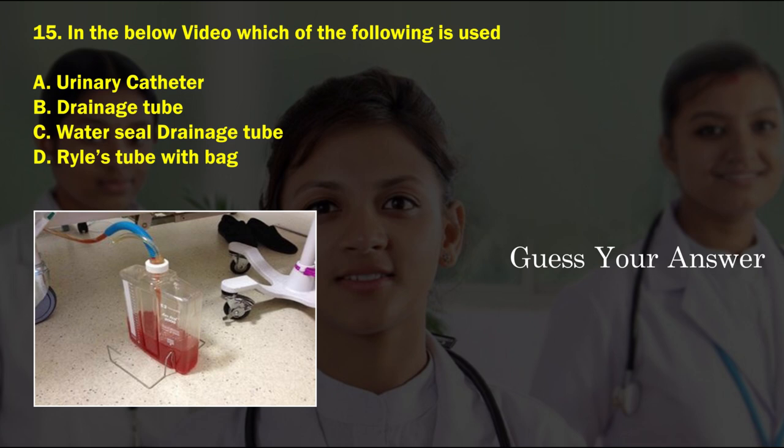In the below image, which of the following is used? Option A: urinary catheter, option B: drainage tube, option C: water seal drainage tube, option D: Ryle's tube with bag. The correct answer is option C, water seal drainage tube.